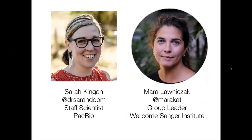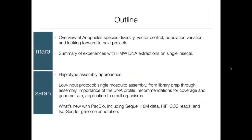Because you can't see us, I thought it would be nice to have a picture of us. I'm on the right, and Sarah Kingan is on the left — she's a staff scientist at PacBio. We're going to split the talk into two. I'll go first, talking about Anopheles species diversity and the importance of vector control for malaria control, and also about population variation and how this new low input approach is going to help us move forward with doing a lot more Anopheles genomics.